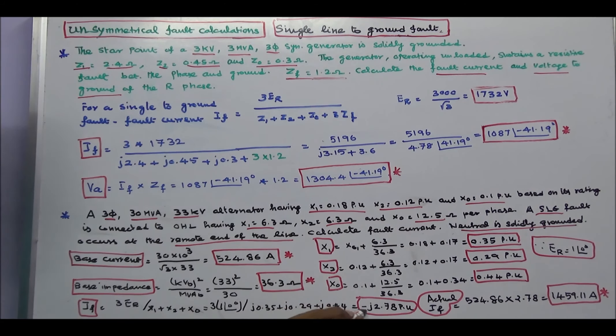Per unit fault current is minus J2.78 per unit. This way we have to work on this problem. Thanks for listening.